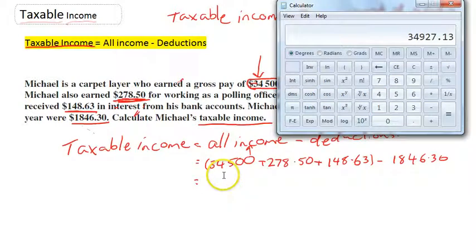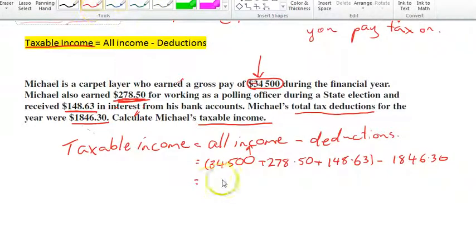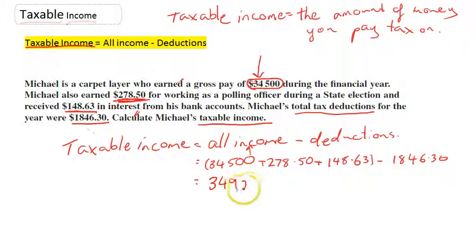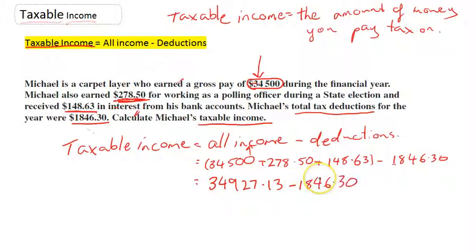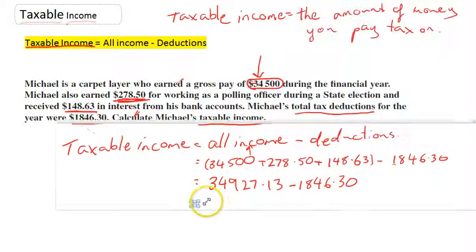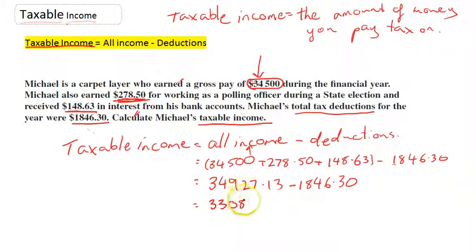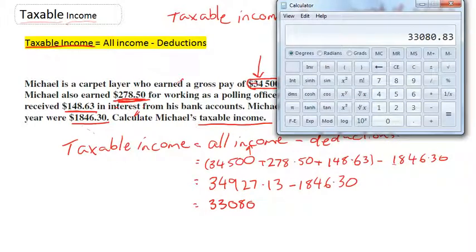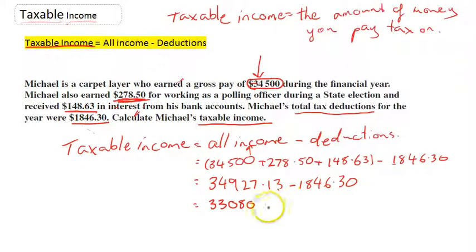Just calculate it now. All of his income for the year comes to $34,927.13. And we're still looking at his deductions there — minus his deductions, $1,846.30. That comes to $33,080.83.